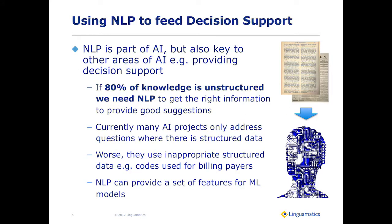NLP also feeds into machine learning. If we take things like decision support, to actually do much of the decision support, we need to access knowledge from unstructured data. Classically, people say that 80% of the knowledge is unstructured, so we need NLP to get that information to then put into our machine learning models.